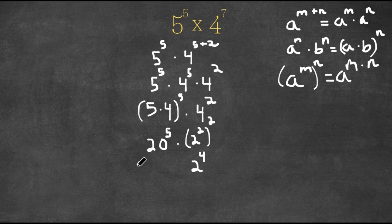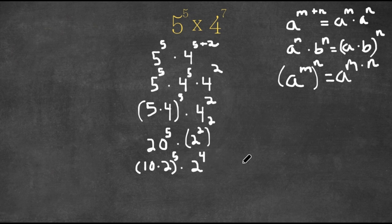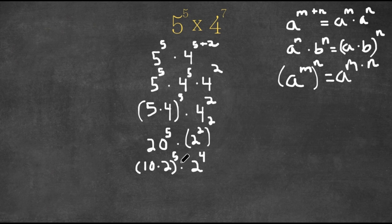And I'm going to rewrite 20 as 10 times 2. So we have 10 times 2 to the power of 5 times 2 to the power of 4. Now we're going to use the property a to the power of n times b to the power of n equals a times b to the power of n, but in reverse. So 10 times 2 to the power of 5 is the same thing as 10 to the power of 5 times 2 to the power of 5.